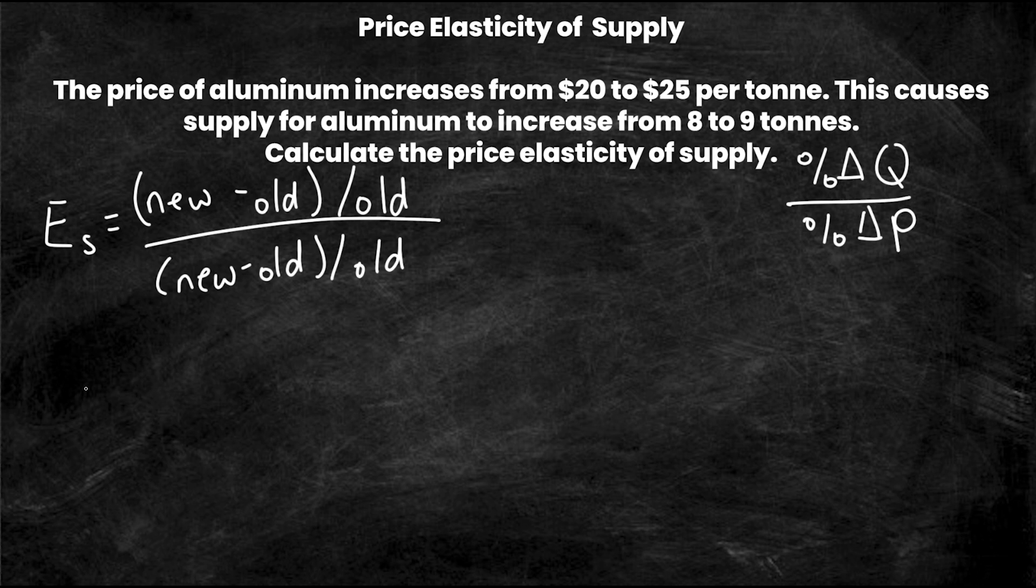So the new quantity, if we look we move from 8 tons to 9 tons so the new quantity is 9 minus the old quantity, so before the price change the quantity was 8 divided by the old quantity which is 8. And this is all over the price change which the new price is $25 minus the old price which is $20 per ton all over the old price which is $20 per ton.